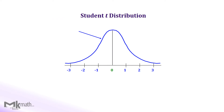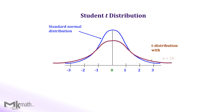Comparing to the standard normal distribution, the shape of the t-distribution depends on the sample size. The t-distribution is used when our dataset is small or if we don't know the standard deviation of the population.